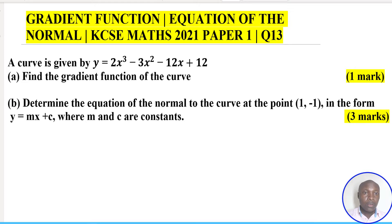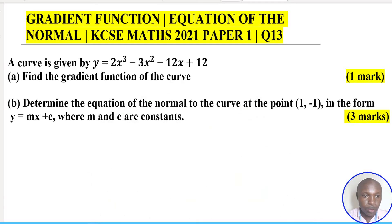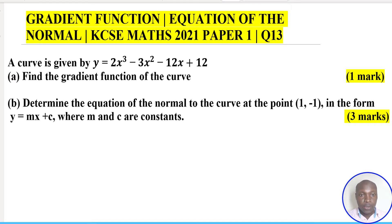Welcome. Let us solve this question on gradient function and equation of the normal. The question reads: a curve is given by y = 2x³ - 3x² - 12x + 12. Part a: find the gradient function of the curve — one mark. Part b: determine the equation of the normal to the curve at the point (1, -1) in the form y = mx + c, where m and c are constants.